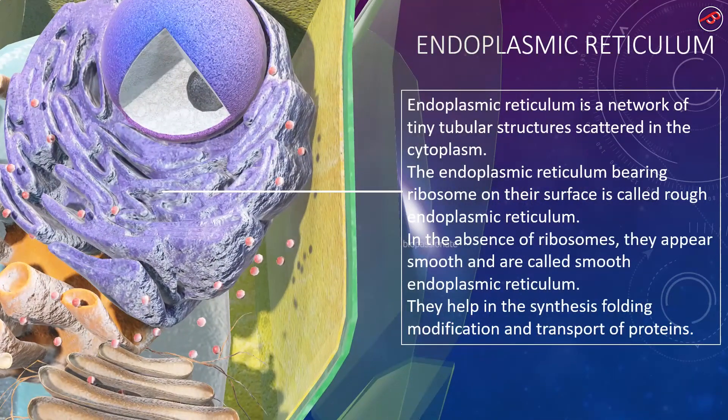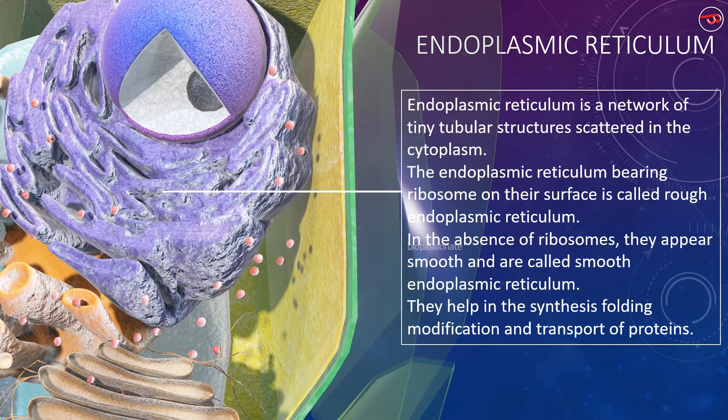Around the nucleus, you can observe a network of tiny tubular structures scattered in the cytoplasm called endoplasmic reticulum. The endoplasmic reticulum bearing ribosomes on their surface is called rough endoplasmic reticulum. In the absence of ribosomes, they appear smooth and are called smooth endoplasmic reticulum. They help in the synthesis, folding, modification and transport of proteins.